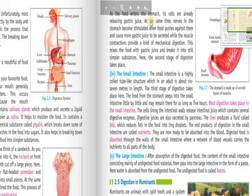As the food enters the stomach, its cells are already releasing gastric juice. At the same time nerves in the stomach become stimulated when food pushes down them and causes more gastric juice to be secreted while the muscle contraction provides a kind of mechanical digestion. This mixes the food with gastric juice and breaks it into still simpler substances. Here the second stage of digestion takes place.